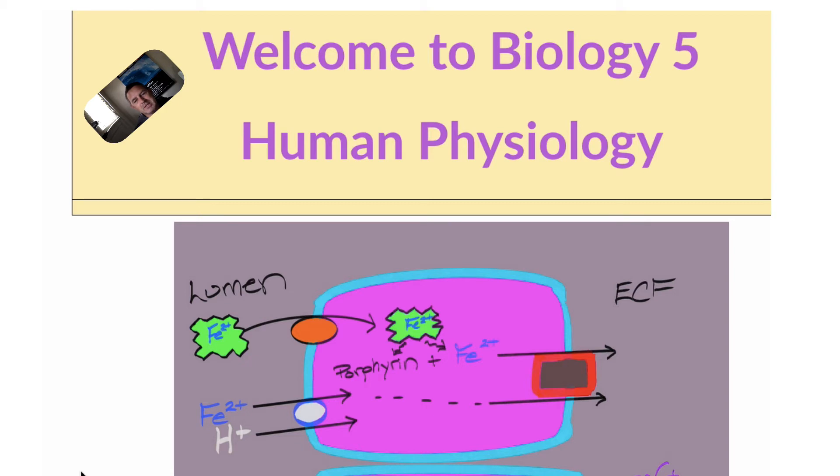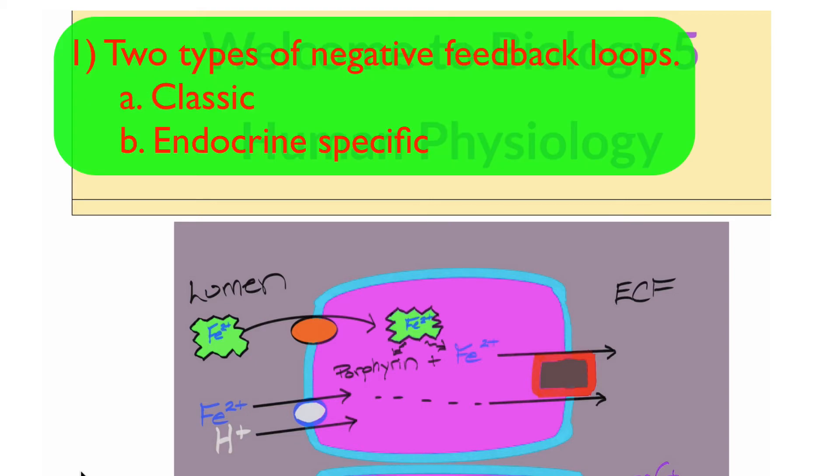The essay question is going to be on one of these three topics. It is either going to be talking about the two types of negative feedback loops with regards to the endocrine system. That is to say, I want you to be able to talk about the classic traditional feedback loop that we've talked about all semester and also the endocrine hormonal specific feedback loop. I want you to talk about the classic traditional negative feedback specific to the homeostatic variable versus the hormonal negative feedback loop.